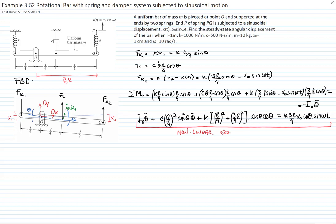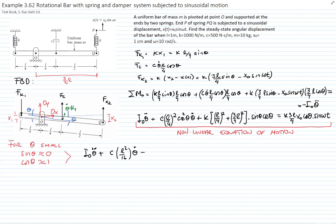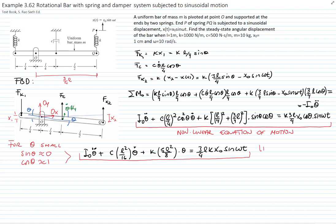For small angular displacements, sine(theta) ≈ theta and cosine(theta) ≈ 1. Linearizing, we get: mass moment of inertia times angular acceleration plus C times L²/16 times angular velocity (since cosine²(theta) becomes 1) plus K times [(L/4)² + (3L/4)²] = K times 5L²/8 times theta equals the forcing term. This is our linearized equation of motion.